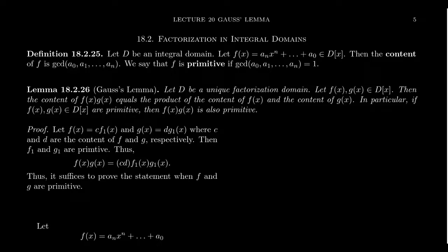Suppose D is an integral domain, and we have some polynomial f(x) over this integral domain. So f(x) looks like a_n times x^n plus a_{n-1} times x^{n-1}, all the way down to a_2 x^2 plus a_1 x plus a_0, where all these coefficients come from our domain D.